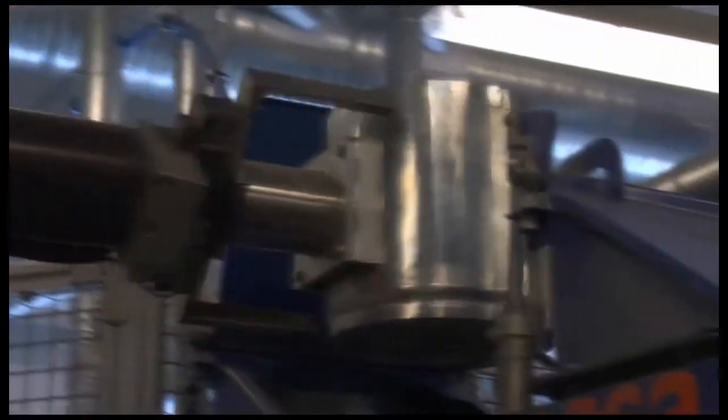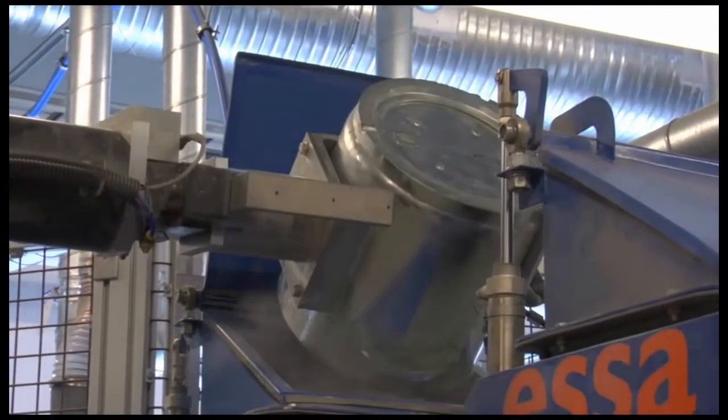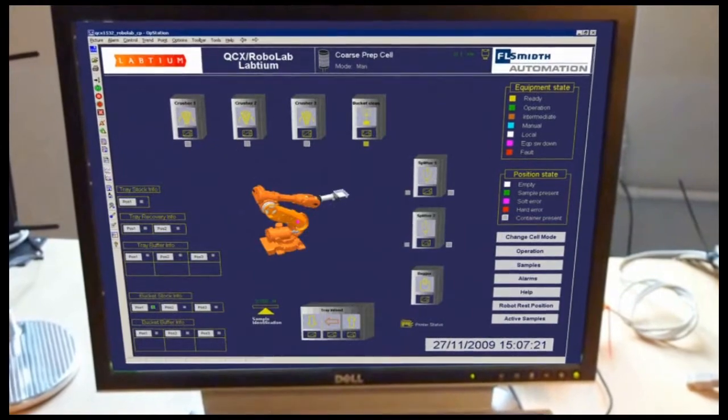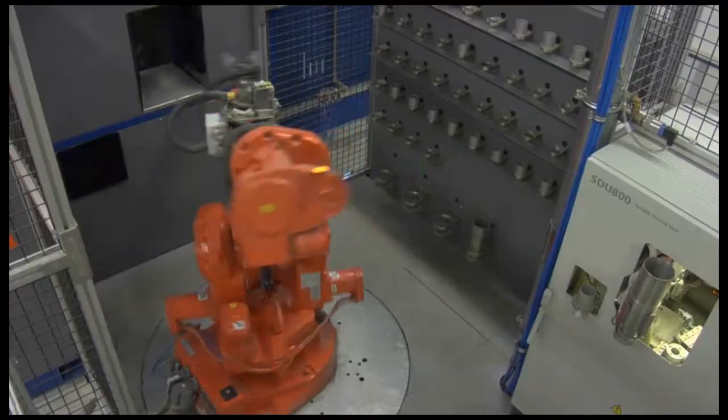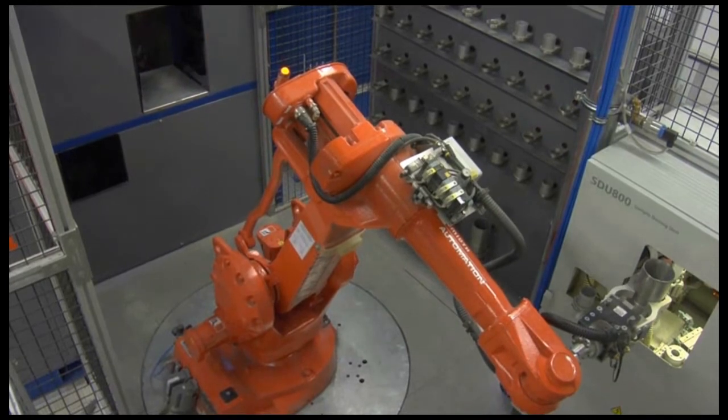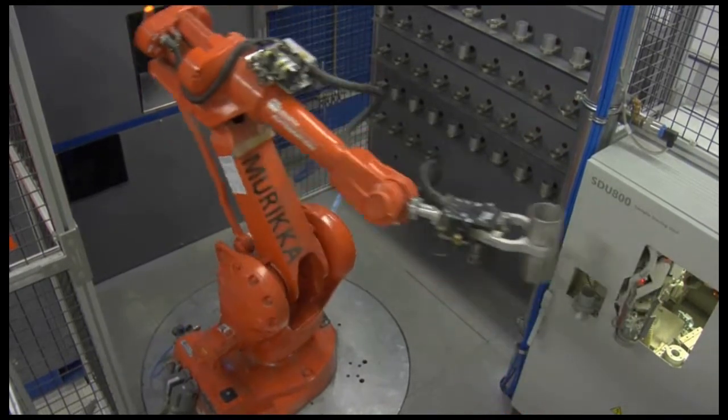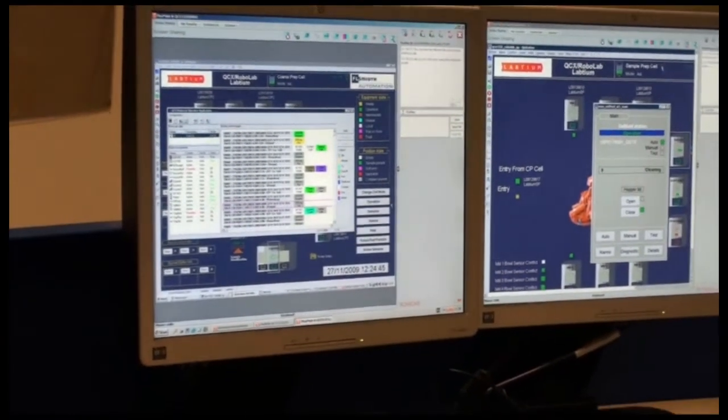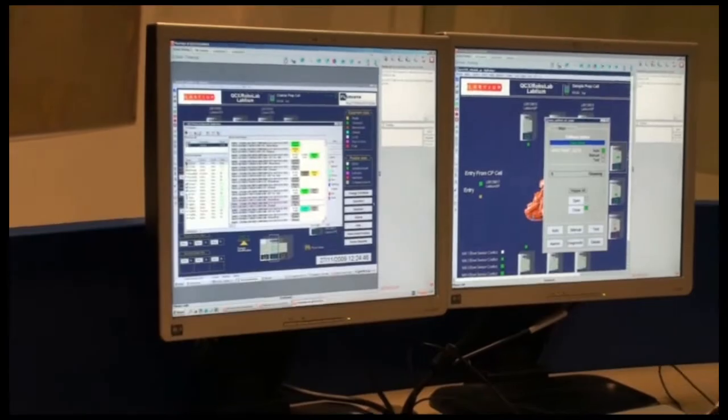Because all sample handling and machine control is done by the QCX software, it is easy to change or add new sample recipes, new pieces of equipment, etc. The overall QCX QA, QC software controls which samples shall be duplicated or triplicated based on the sample recipe and overall QA, QC scheme.